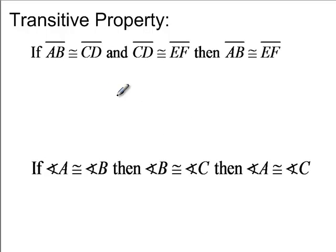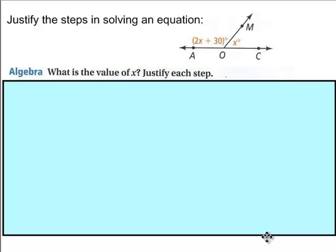Transitive property. If AB is congruent to CD, I'm going to highlight underneath it, and CD is congruent to EF, we can make the jump to then say that AB is congruent to EF. And the same thing works for angles as well. So if you say angle A is congruent to angle B, B is congruent to angle C, we can just chop out the middleman there and go straight to angle A is congruent to angle C.